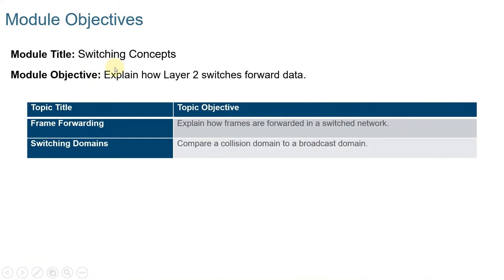This video lecture is entitled Switching Concepts. At the end of this video lecture, you should be able to explain how layer-2 switches forward data. This video lecture is divided into two sections: Frame Forwarding, which explains how frames are forwarded in a switched network, and Switching Domains, which compares a collision domain to a broadcast domain.